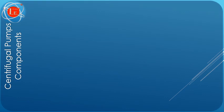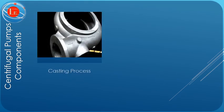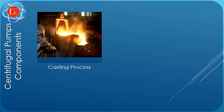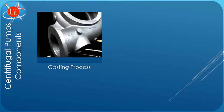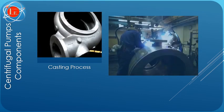Pump casing can be fabricated by casting, as shown in this picture, or fabricated by forging associated with welding, as shown in the second video.